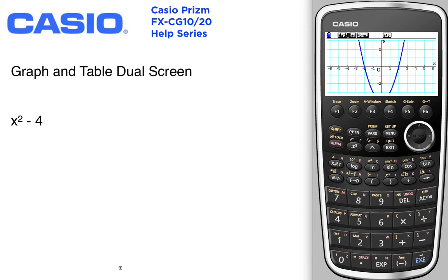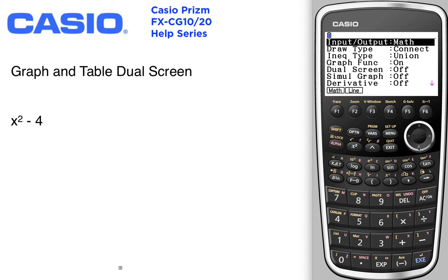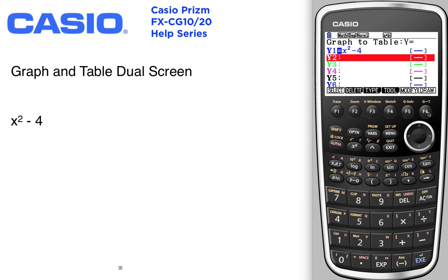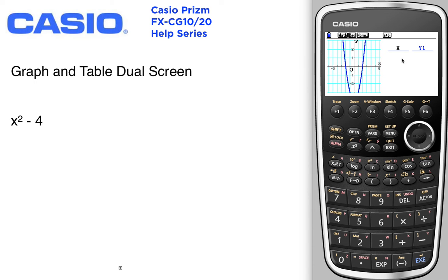What I would like to see is a graph and a table in the same screen. I'm going to go into setup. I'm going to toggle down to where it says dual screen. I'm going to go g to t graph to table. Now what graph to table is going to let me do is create a graph and also a table.